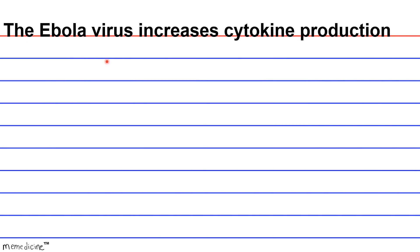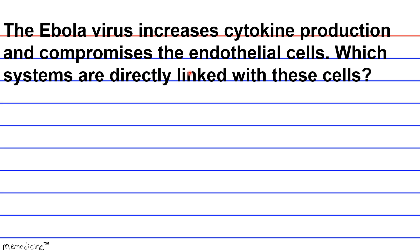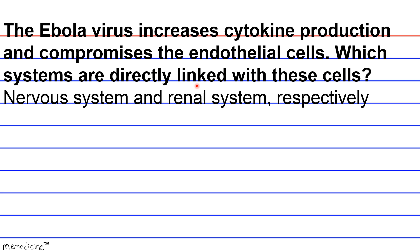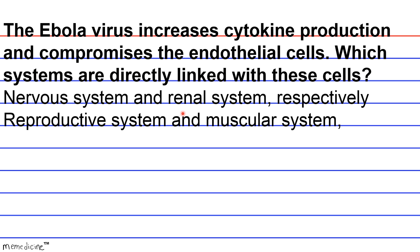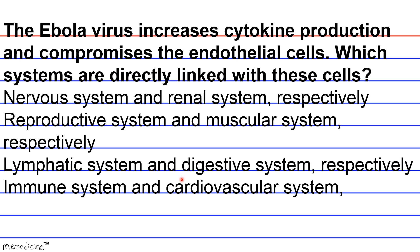The Ebola virus increases cytokine production and compromises the endothelial cells. Which systems are directly linked with these cells? A — nervous system and renal system respectively. B — reproductive system and muscular system respectively. C — lymphatic system and digestive system respectively. D — immune system and cardiovascular system respectively.